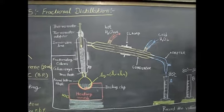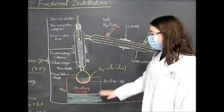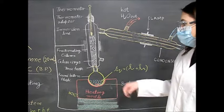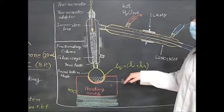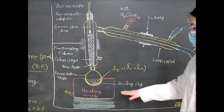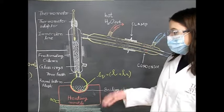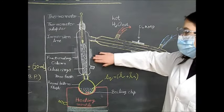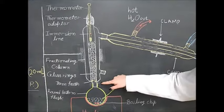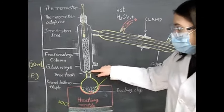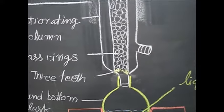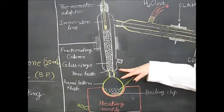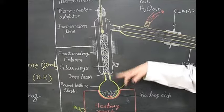The apparatus consists of many pieces. Starting from the bottom, we have the heating mantle which holds the round-bottom flask. The round-bottom flask will contain the 2-butanone and 2-pentanone as well as some boiling chips that help mix the mixture while it boils. Coming up from the round-bottom flask, we have the fractionating column, or Hempel column, which has glass teeth at the bottom — be careful not to break them. Inside the fractionating column we have glass rings that create more surface area for better separation.